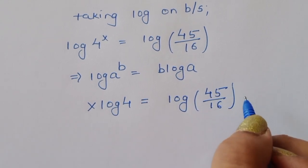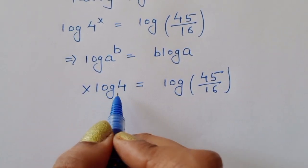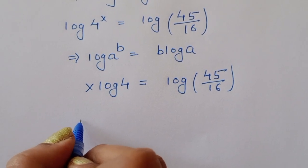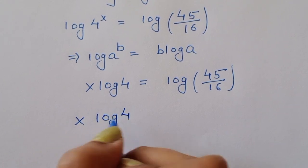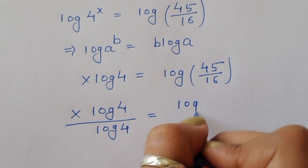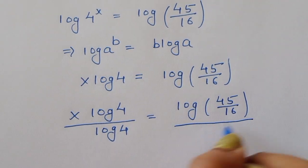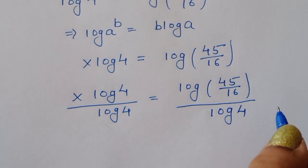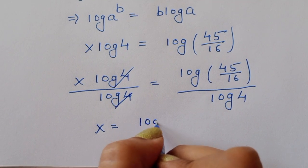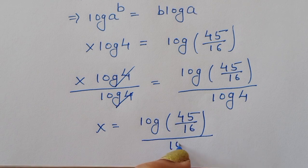Now we have to cancel log 4, so we divide both sides by log 4. Dividing both sides by log 4, we get x times log 4 divided by log 4 is equal to log of 45 over 16 divided by log 4. Log 4 divided by log 4 cancels, so x is equal to log of 45 over 16 divided by log of 4.